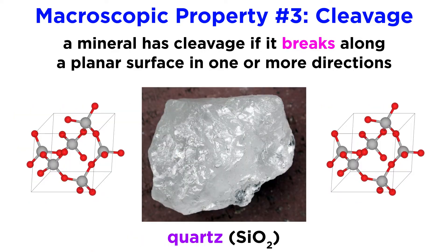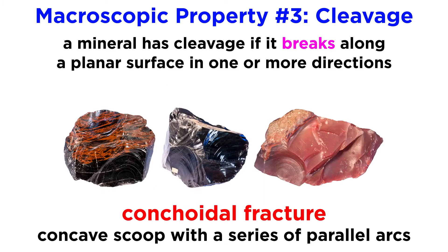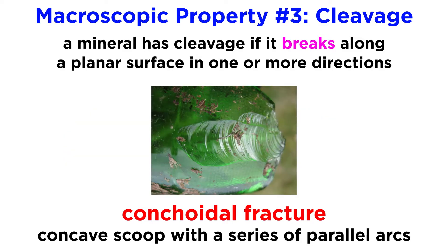Some minerals totally lack cleavage and break along random uneven fractures. The mineral quartz, or silicon dioxide, has a lattice composed of equal strength silicon-oxygen bonds in all directions, and therefore lacks cleavage. However, quartz does have a characteristic fracture pattern called conchoidal fracture. A conchoidal fracture appears as a concave scoop with a series of parallel arc-like steps along its surface — think of a broken piece of thick glass, like the bottom of a glass soda bottle.